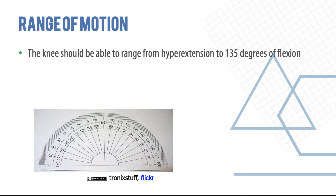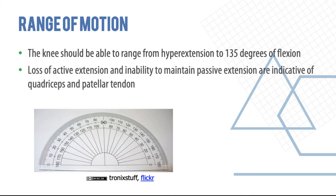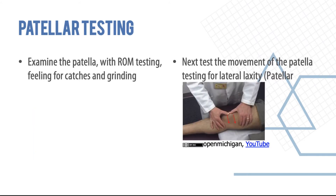Range of motion is very important. The knee should range from hyperextension (zero degrees) to at least 130–135 degrees of flexion. Loss of active extension and inability to maintain passive extension are indicative of extensor mechanism injury — involving the quadriceps tendon, patellar tendon, or patellar bone. Rupture of these tendons or a displaced patellar fracture can result in a negative straight leg raise test, or inability to maintain passive extension. Also examine the patella — feel for catches and grinding, and test lateral laxity using the quadrant test.